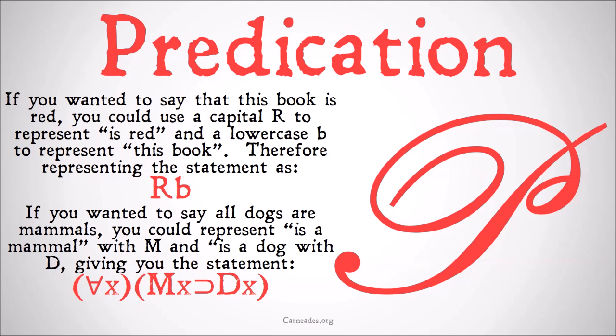If you wanted to say 'all dogs are mammals,' you could represent 'is a mammal' with M and 'is a dog' with D, giving you the statement: for all x, Mx implies Dx.